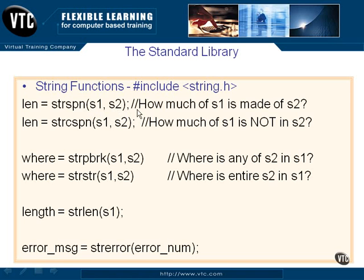of S1 is made up of S2. So if we did, let's say this is the string, how much of S1 is made up of S2, and S2 was the letters H-O-W. We would see that 3 would be returned because the H-O and W is where the prefix stops.